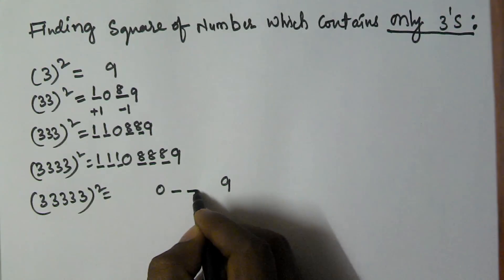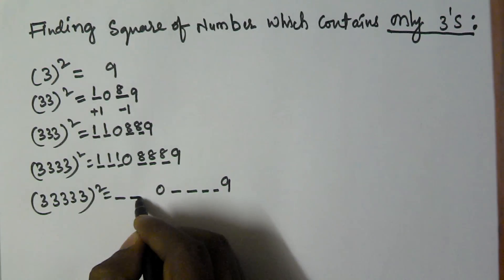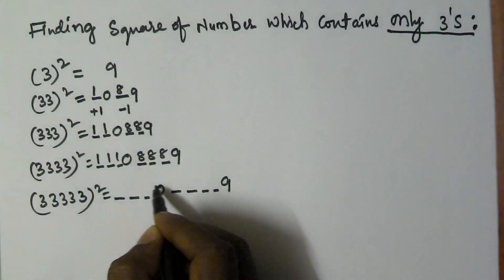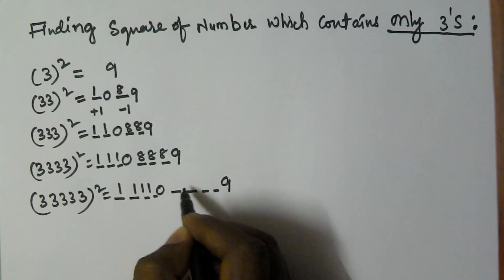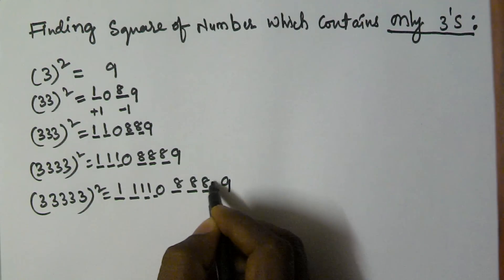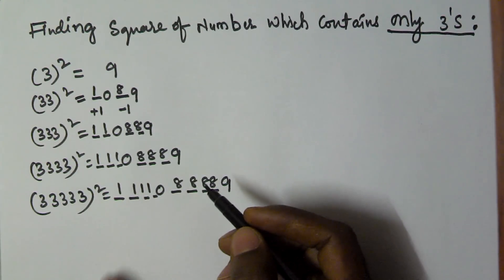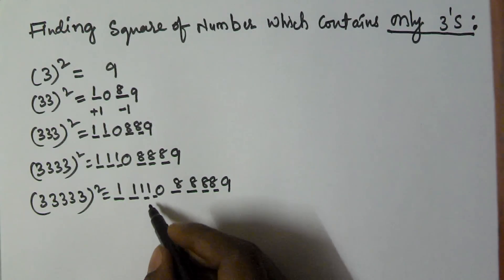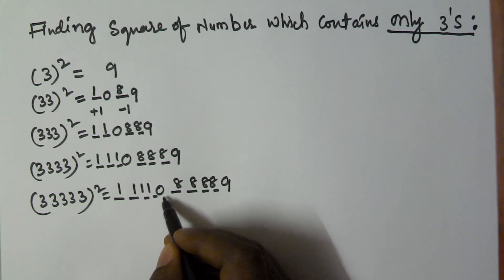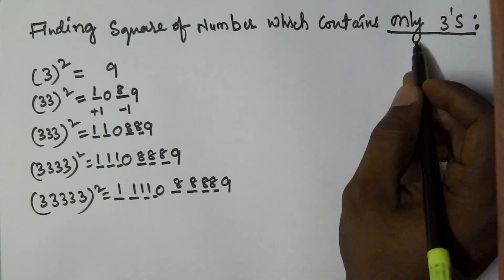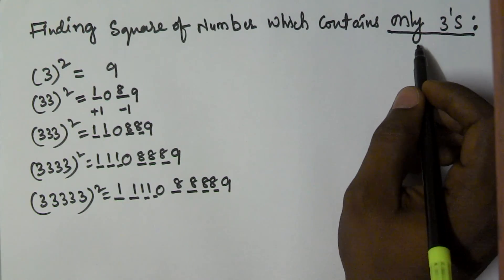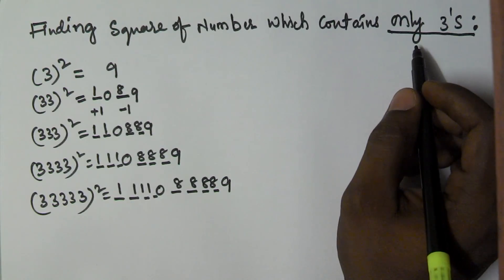In the same manner, 33333 squared — there are 5 digits, so we take 4 places on each side. We fill 1111 on the left and 8888 on the right. So 33333 squared is 1111088889. This is a very simple way to remember the square of a number which contains only 3s. Thank you for watching, please subscribe to my channel.